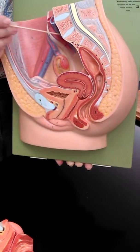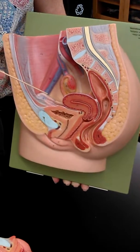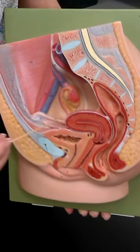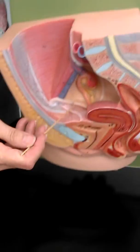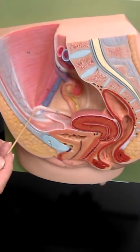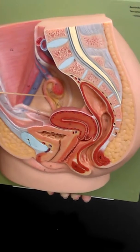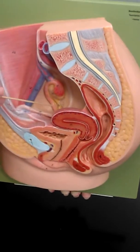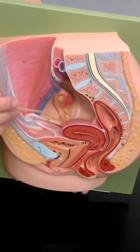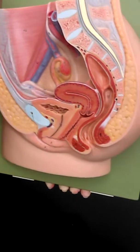Again, blood vessels: common iliacs, external and internal iliacs. And then there are a few ligaments. For the female reproductive tract, there's the round ligament that attaches it to the pelvic wall. We also have the ovarian ligament — number 76 on the model — which attaches the ovary to the fundus.